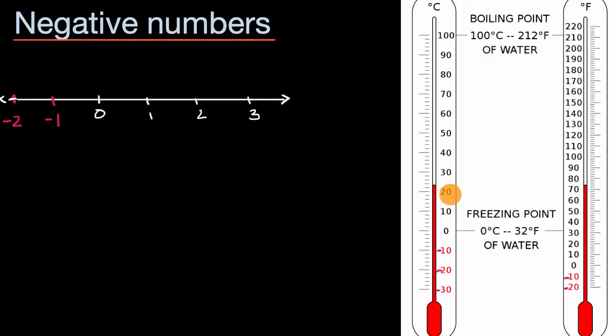One is 20 degrees above zero, one is 20 degrees below zero. So big picture, for any given number, there's a negative version of it.